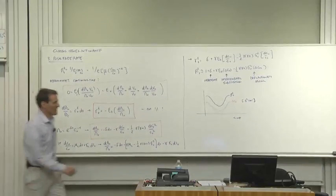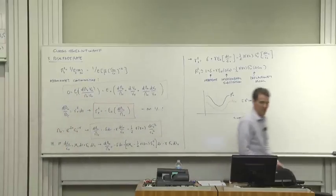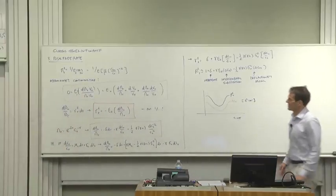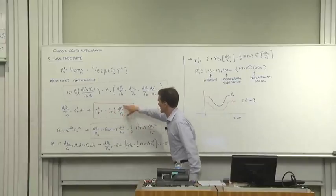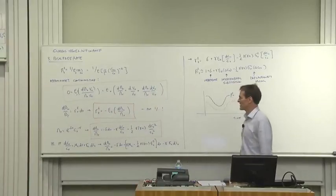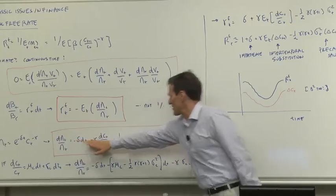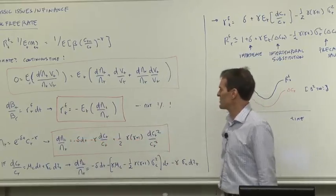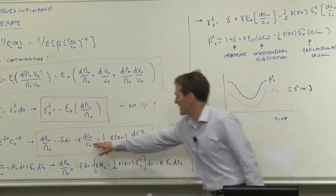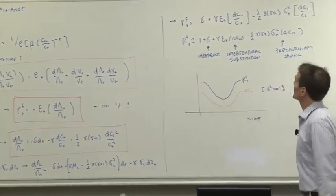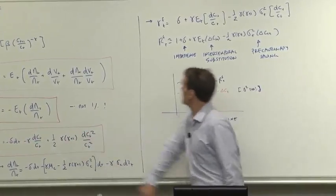Now we plug it all in, and we've got a pretty answer. Rf is minus expected discount factor growth. Discount factor growth is this term here. So what do we get? The expected value of that is the drift in consumption. So we just take expected values.